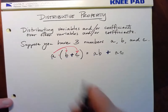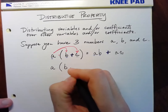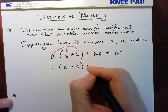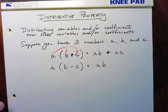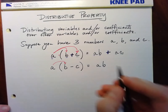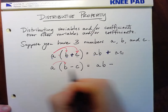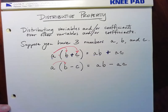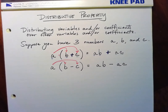The same thing works for subtraction. If we had this rewritten with subtraction — A times (B minus C) — it would be A times B minus A times C, because distributing works the same way with a minus sign.